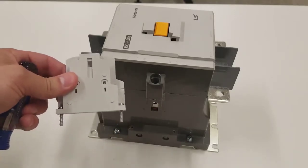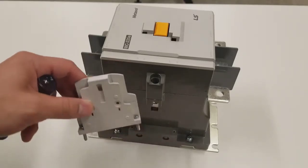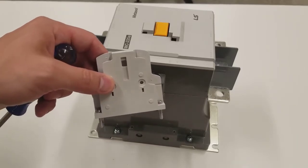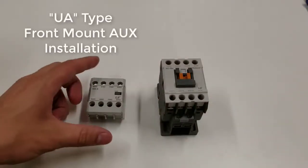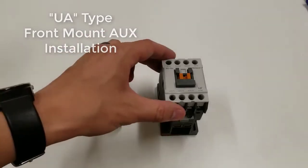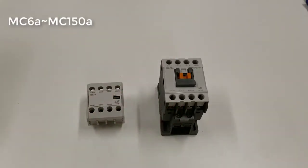Installation would be the reverse of removal. Just pop it back in there and screw down each Phillips screw. Next up I'm going to show you how to install a front mount auxiliary onto a smaller contactor. So up to 150 amps, up to an MC150.